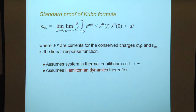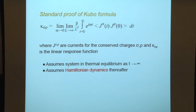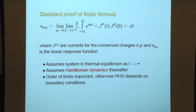Everything that I say today will be about classical systems. There are a few assumptions here. First, the system is assumed to be in thermal equilibrium as t tends to minus infinity, and thereafter the system undergoes Hamiltonian dynamics. In a classical system it would be a Liouville operator. The main thing is that you don't have heat baths connected to the system — heat baths have established thermal equilibrium, and thereafter the dynamics is deterministic. Also, the order of limits in this integral is important: the thermodynamic limit has to be taken first before the omega goes to 0 limit.